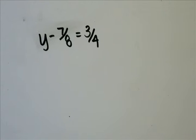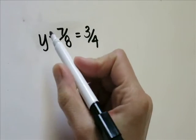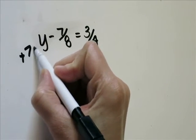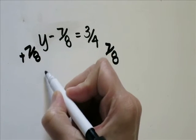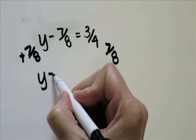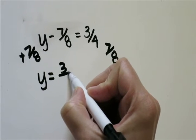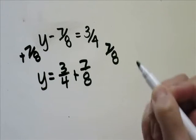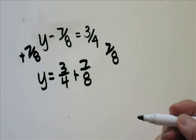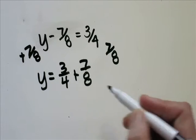Problem 17, y minus 7 over 8 equals 3 over 4. Since you have minus 7 eighths, you're going to need to add 7 eighths to each side to cancel that out. So you'll end up with y equals 3 fourths plus 7 eighths. You're going to need a common denominator because you're adding two fractions together.